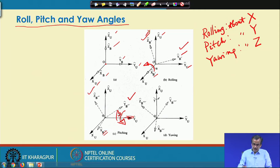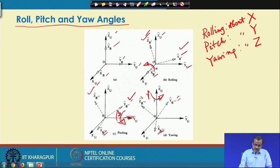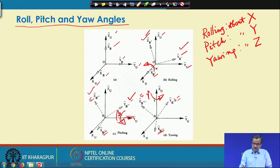Now I am going to take the rotation about zu. If I take the rotation about zu by an angle gamma in the anticlockwise sense, xb triple prime will be different from xb double prime, yb triple prime will be different from yb double prime, and zb triple prime will be different from zb double prime. So the final coordinate system — the final frame — I will be getting as xb triple prime, yb triple prime, zb triple prime after taking three rotations in a particular sequence.